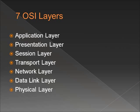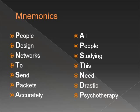There are seven layers of the OSI model: the application, presentation, session, transport, network, data link, and physical layers. A common method people use for remembering these seven layers is called mnemonics. An example would be 'People design networks to send packets accurately,' and another less common one would be 'All people studying this need drastic psychotherapy.'